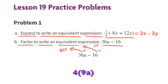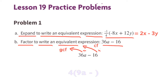Next, bring down the minus sign, and since 4 times 4 equals 16, the second term inside will be 4. So the expression reads 4 on the outside times the quantity 9a minus 4 on the inside.